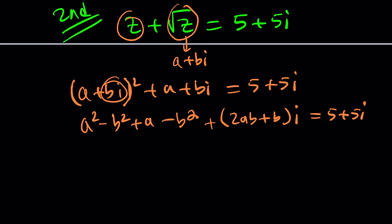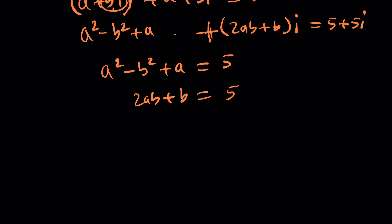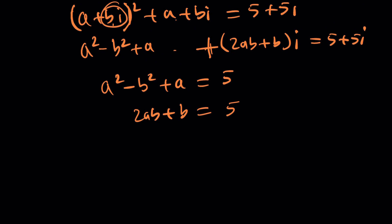We're going to have a squared plus a minus b squared and 2ab plus b will be the imaginary part equals 5 plus 5i. So now we have a squared minus b squared plus a equals 5 and 2ab plus b equals 5. So if you're able to solve this system, you should get the answers. And we didn't square anything, so this should be good to go.